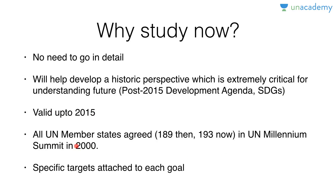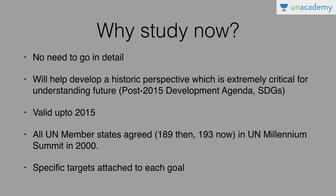The MDGs are valid up to 2015 and the base year is always taken as 1990. All United Nations member states — under the UN Millennium Summit and UN Millennium Declaration — agreed to the MDGs. There were 189 UN member states then; there are 193 now. There are 21 specific targets attached to 8 goals.